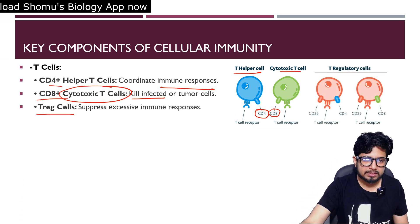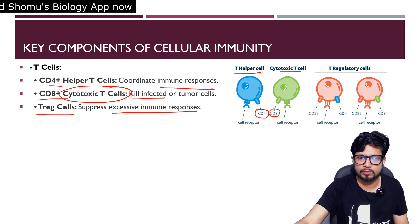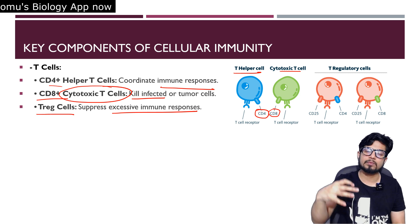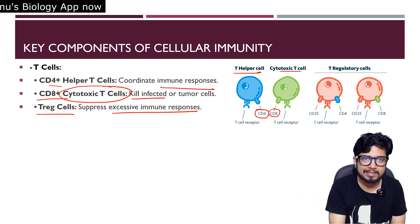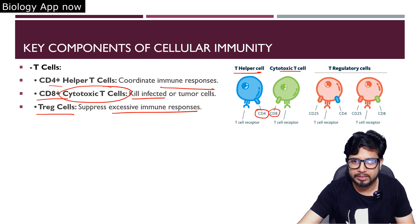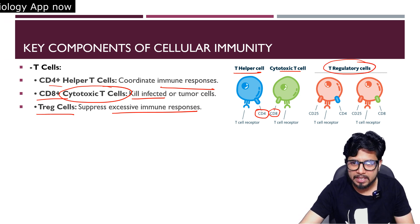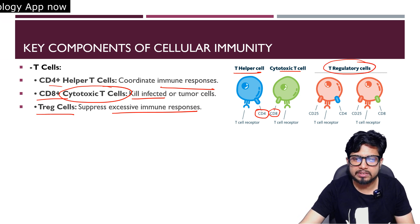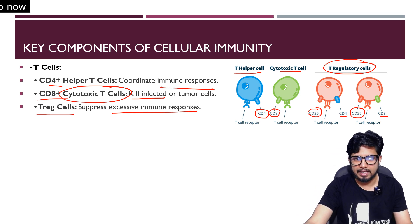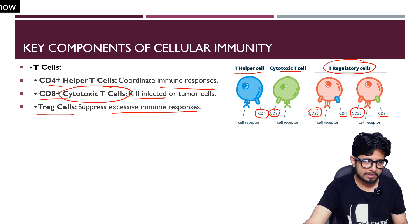T regulatory cells suppress excessive immune responses. T cells not only elicit immune responses but can also suppress them. These regulatory T cells have CD25 on their surface, and they may also have CD4 or CD8, but CD25 is the key surface marker that identifies them.